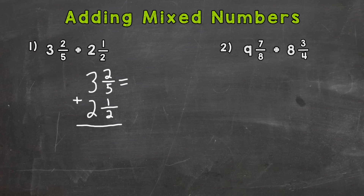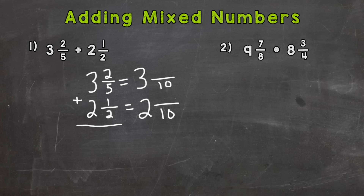Let's think: what is going to be my common denominator for a five and a two? It happens to be ten. So I need to rename both of these mixed numbers — the fractional part — with the common denominator of ten.